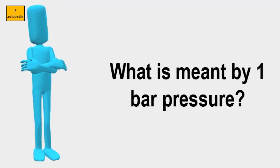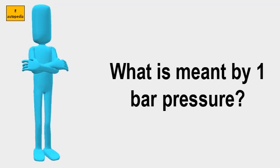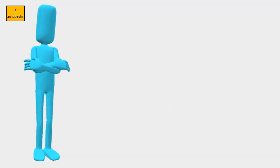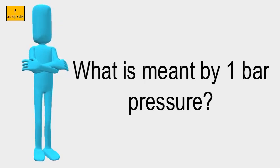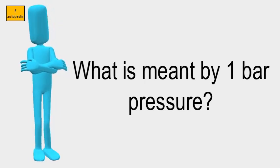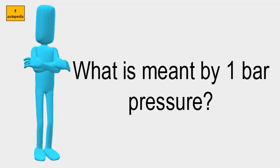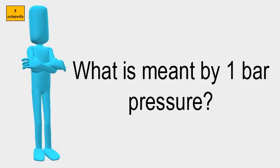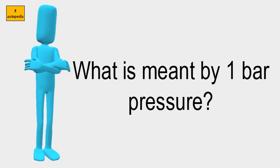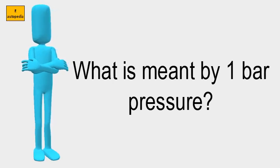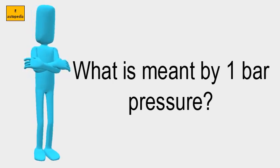What is meant by 1 bar pressure? Atmospheric air pressure is often given in millibars, where standard sea level pressure, 1 atm, is defined as 1013.25 mbar, equal to 1.01325 bar.